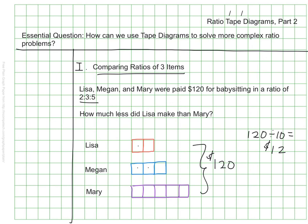But then if I'm trying to figure out how much less Lisa made than Mary, I'll see that Lisa has two $12. Mary has five $12 to make a total of 60. So 60 minus 24 tells me that Mary made $36 more. And I've answered that question. Really simple and straightforward with my ratio tape diagram.